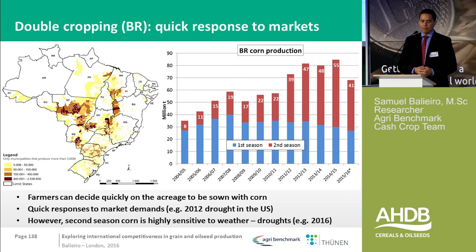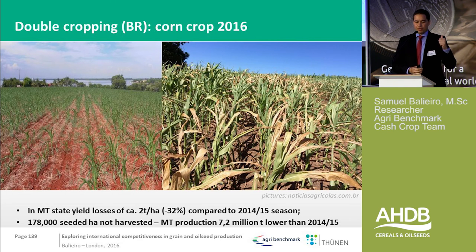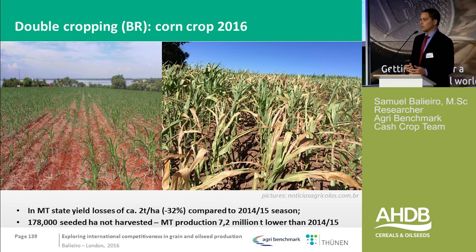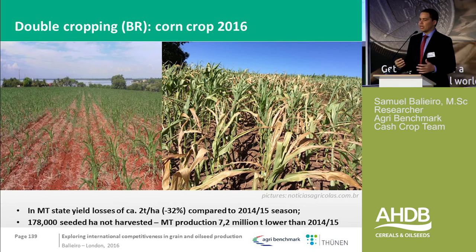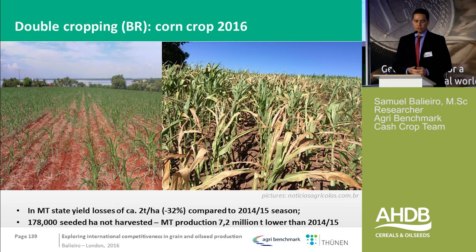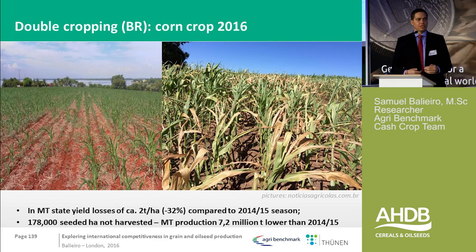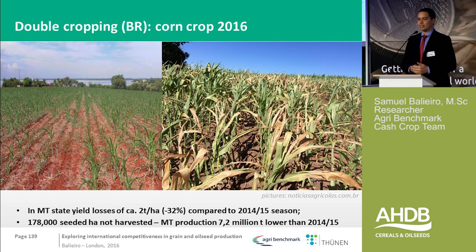Looking at very recent data from this week on double cropping: in Mato Grosso, which produces 30% of Brazil's soybeans and corn, there was a 30% yield loss — about 2 tons per hectare. More than 170,000 hectares were not even harvested because losses were so great it didn't make sense to do so. It's a great option technically for farmers, but for the market it's complex and very hard to forecast.